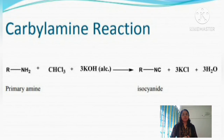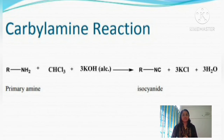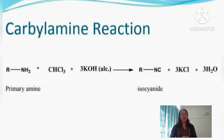The next method of preparing isocyanide is by the carbylamine reaction. This reaction is given by primary amines only — secondary or tertiary amines do not undergo it. When any primary amine (aliphatic or aromatic) is treated with chloroform in the presence of alcoholic KOH, isocyanide is obtained as the product. This is called the carbylamine reaction.